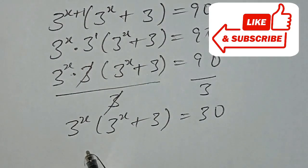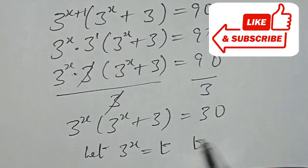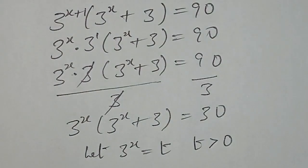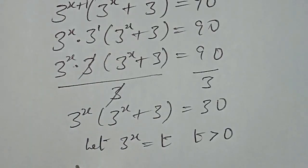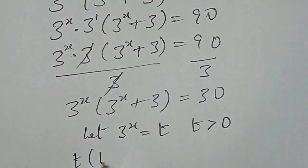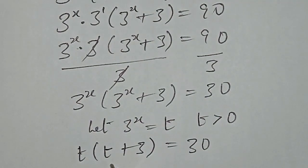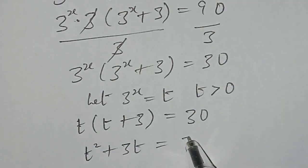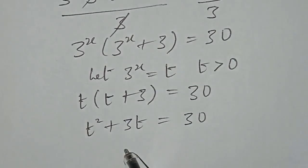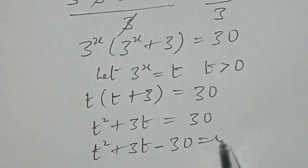From here we let 3 to the power of X equal to t, such that t must be greater than 0. We transform the equation to t into bracket t plus 3 equals 30. Expanding, we have t squared plus 3t equals 30, and moving 30 to the left hand side gives t squared plus 3t minus 30 equal to 0.